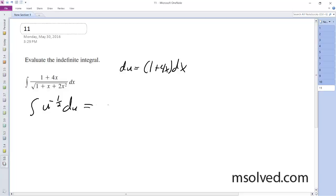And so u to the 1 half, well, u to the negative 1 half plus 1, and then over negative 1 half plus 1, so I get over 1 half plus c.